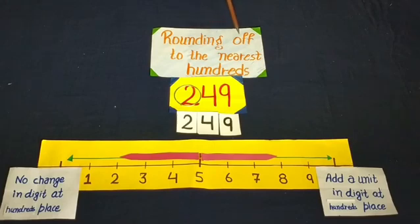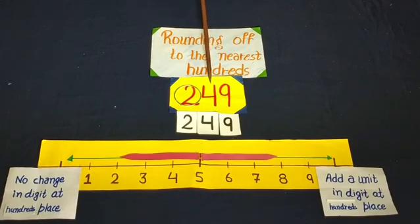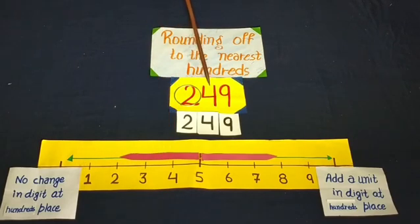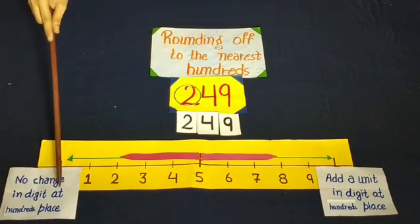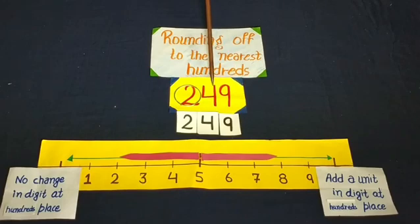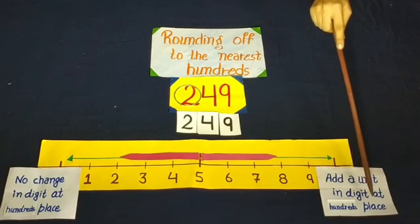Now we do rounding to the nearest hundreds. Dear students, if we do rounding to the nearest hundreds, look at the digit at the tens place. If the digit at tens place is 4, 3, 2, or 1, there is no change in the digit at hundreds place. If the digit at tens place is 5, 6, 7, 8, or 9, add a unit to the digit at hundreds place.